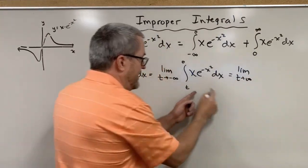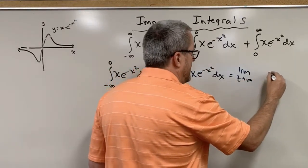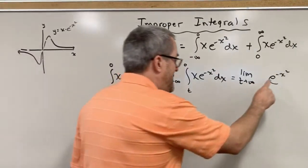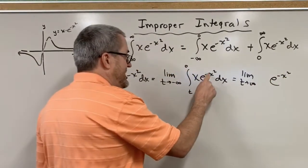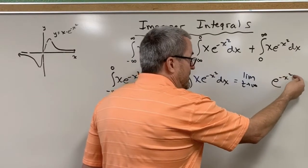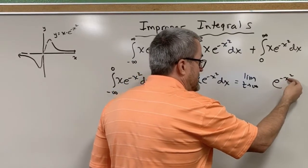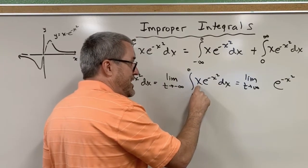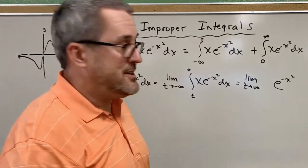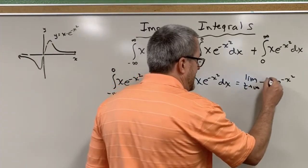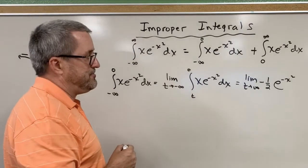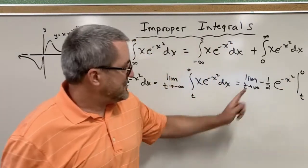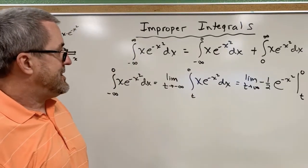This integrand has beautiful structure — backwards chain rule structure. What did you take the derivative of to get e to the negative x squared? Well, the derivative of e to the negative x squared is e to the negative x squared times negative two x, by the chain rule — that's why that x is there. The negative two coefficient didn't survive, so we must have had a negative one-half to counteract it. So the antiderivative is negative one-half times e to the negative x squared.